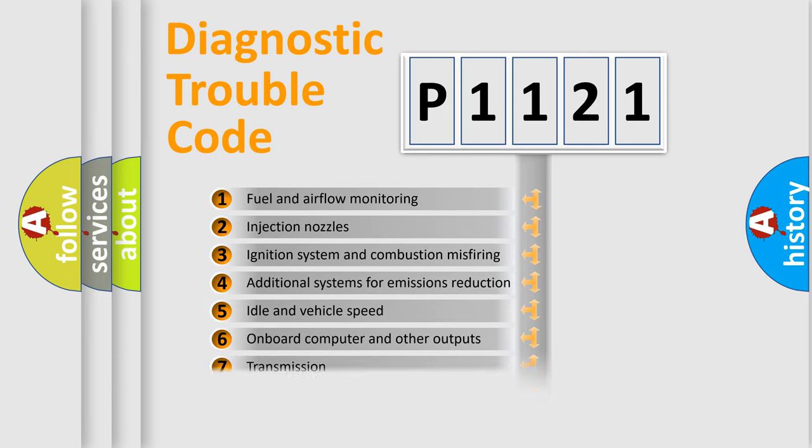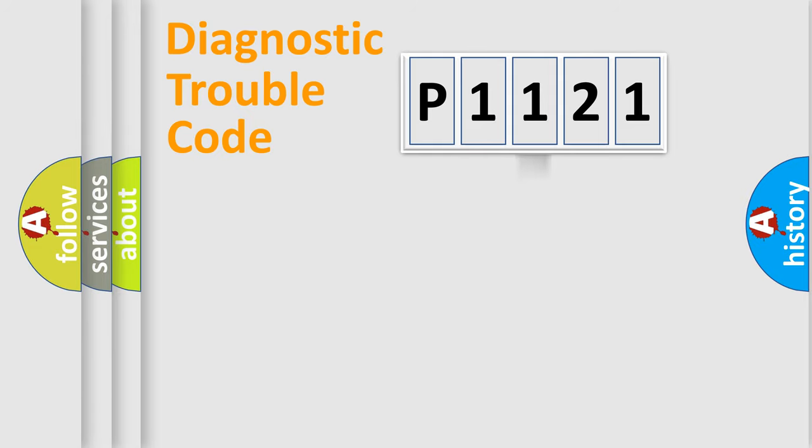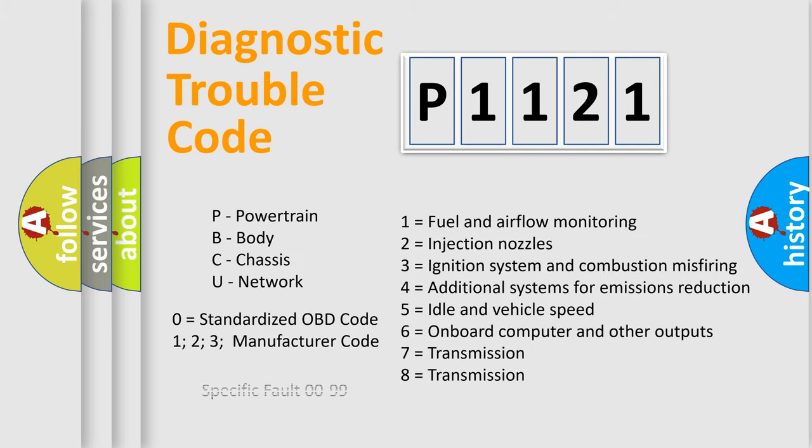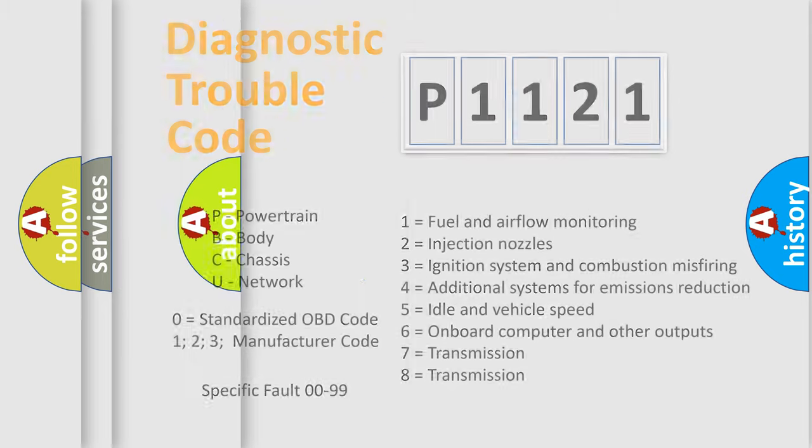The distribution shown is valid only for the standardized DTC code. Only the last two characters define the specific fault of the group. Let's not forget that such a division is valid only if the second character code is expressed by the number zero.